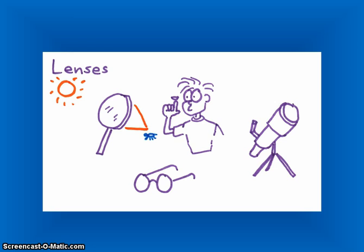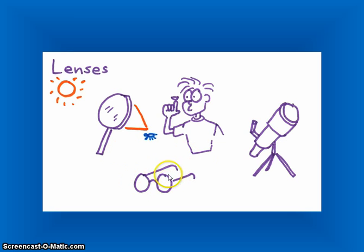Lenses are found in many places in the world around us. You'll find them in magnifying glasses — and if you've ever tried to light ants on fire with the sun, that's a lens at work. You might also wear glasses with glass lenses, or contact lenses made of plastic. Your eyes themselves contain lenses, and lenses are also found in telescopes, microscopes, and cameras — all containing some sort of transparent material that lets light through.